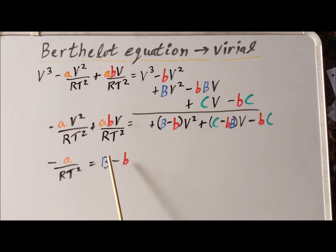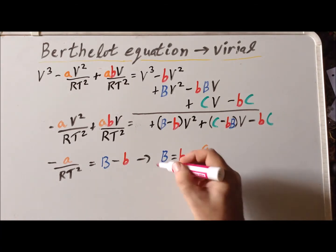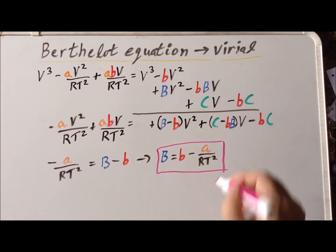Our objective here is to solve for the second virial coefficient, capital B, which is easy enough to do simply by adding a small B to each side. This shows us that the virial equation constant B to correspond to the Berthelot equation, this capital B has to be little B minus A over RT squared. So that's the first of the two constants that we have to solve for.